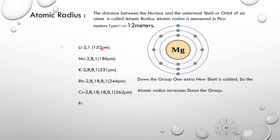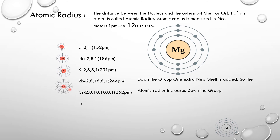So, going down the group, what happens? One new shell is added each time. As a result, the distance between the center of the nucleus and the outermost shell keeps increasing down the group. The atomic radius goes on increasing down the group. The key point to remember: down the group, due to the addition of one new shell, atomic radius increases.